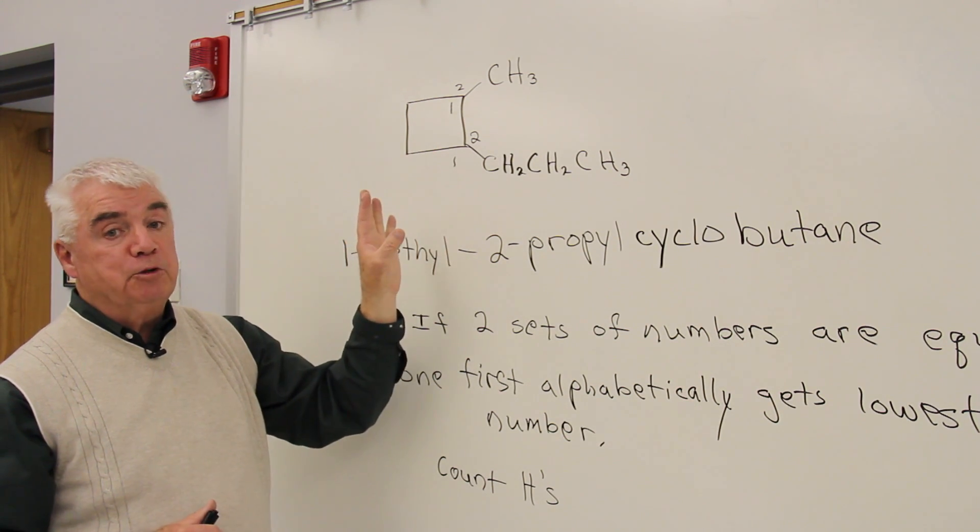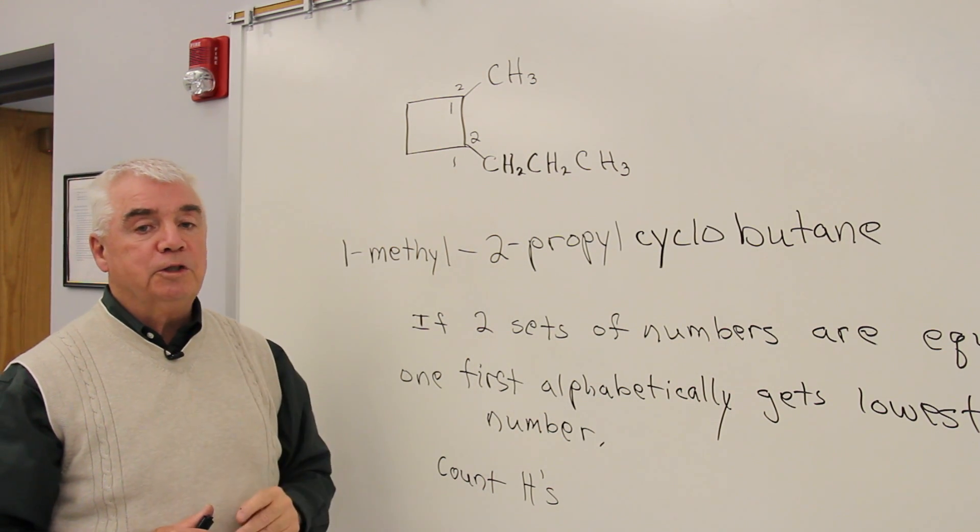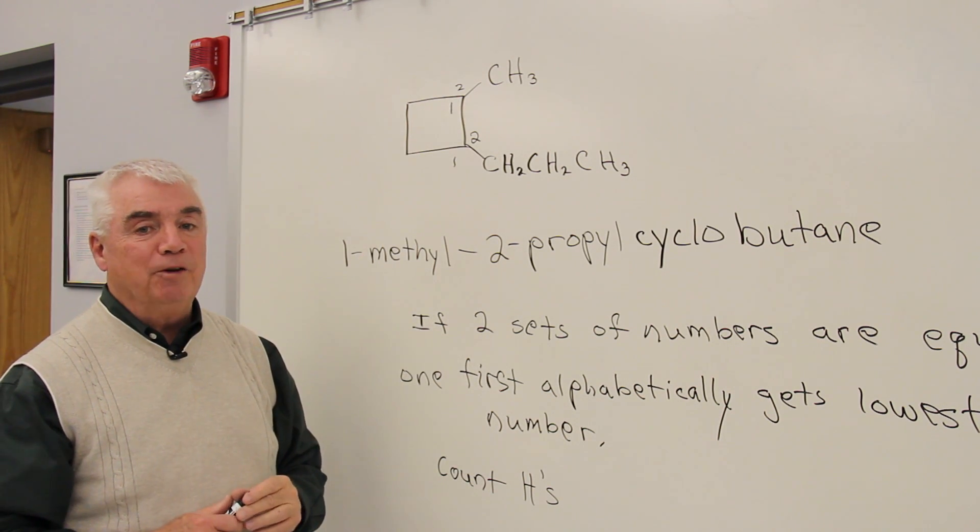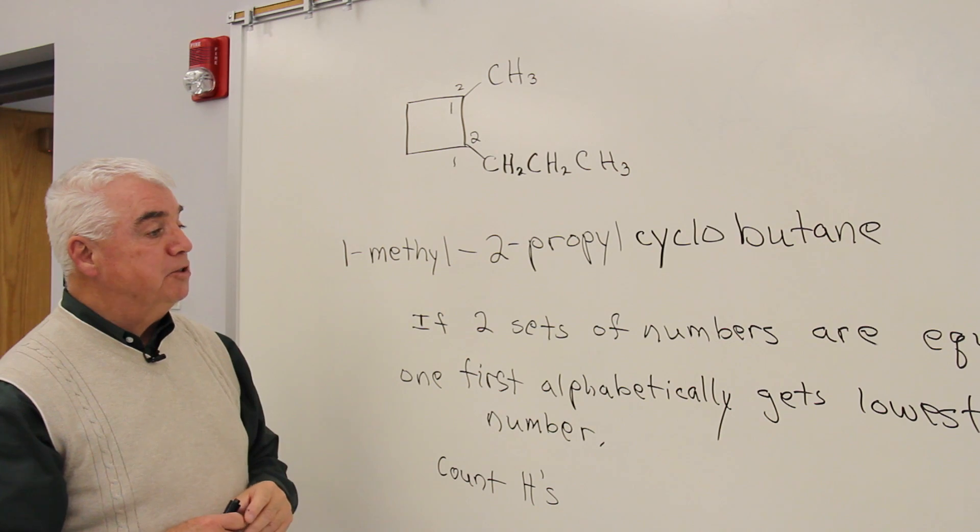If the two sets of numbers are different, you use the lowest set. It wins. But if the two sets of numbers, one and two and one and two in this case, are identical...